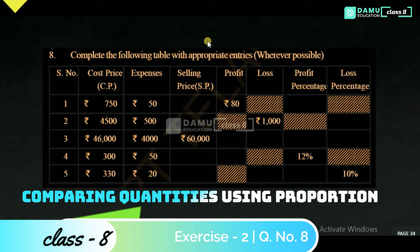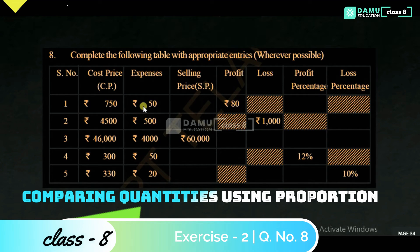In this module we are going to discuss: complete the following table with appropriate entries wherever possible. Here they are given cost price and expenses. Cost price is 750 rupees and expenses 50 rupees. We need to find selling price, profit, and profit percentage.